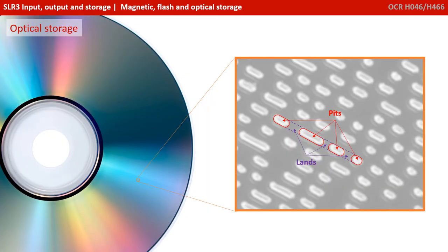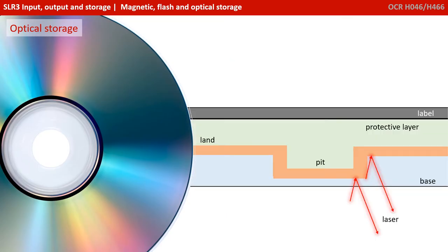All optical drives work by shining a laser at the media and processing the reflection from the media. In the case of read-only drives — CD-Rs and DVD-Rs — the surface of the disc is physically burnt by the laser, creating what are known as pits and lands, suitable for storing 0s and 1s. More accurately, it's the point where the pit starts or ends which causes the laser light to scatter and thus is not reflected as well. It's this change of reflective and non-reflective areas which is read and interpreted as the 0s and 1s.